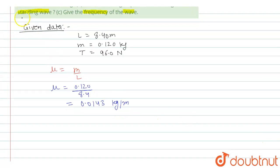Now, the formula to calculate the velocity of the wave is given by V is equal to under root T upon mu. Substitute all the values we get V is equal to under root 96.0 upon 0.0143 kg. And this will be equal to 82 meter per second.